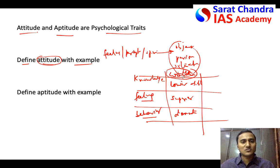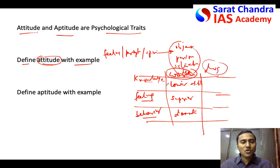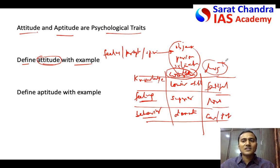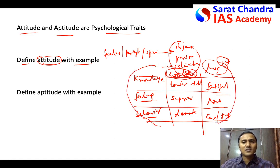Take another example — dogs. If your knowledge about dogs is that they are highly faithful animals, your feeling will be love. As you love dogs, your behavior will be that you will take good care of them, domesticate them, and be friendly with them. This is a positive attitude towards animals. You can draw a chart to explain this clearly to the evaluator, and then finish what you want to explain regarding attitude.